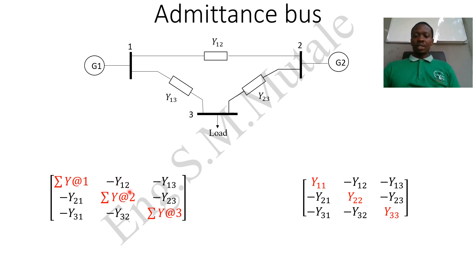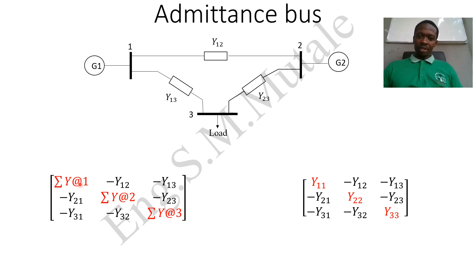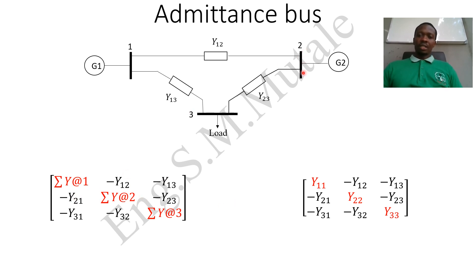After filling the diagonal elements, the off-diagonal elements come from the individual admittances between buses. For bus one, you have the admittance between bus one and bus two, and the admittance between bus one and bus three. Similarly for bus two, you carry the admittances Y21 and Y23.